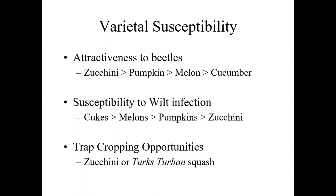That can be useful if you're trying to do trap cropping — plant a highly attractive variety alongside your commercial crop, then control the beetles in that variety. You do need to control them there, because after they run out of food source, they'll spread into the commercial crop. Susceptibility to wilt infection is almost the complete opposite: cucumbers are very susceptible, then melons, then pumpkins, then zucchini. So you still need a fairly low tolerance for beetles in cucumbers, even though you might not see as many there.